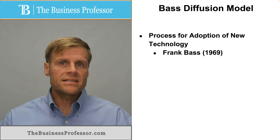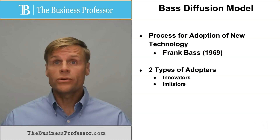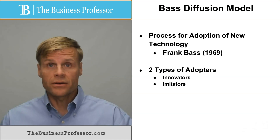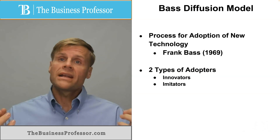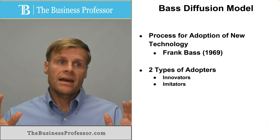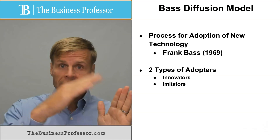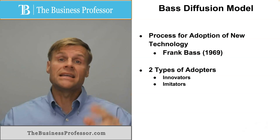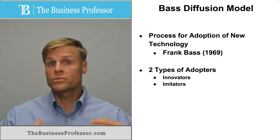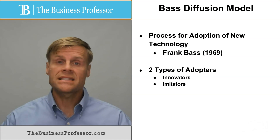The essence of the model is that there are really two types of adopters: innovators and imitators. Bass created a coefficient for each of these that sought to estimate the rapidity and constancy of adoption by these individuals of new technologies in a given society.